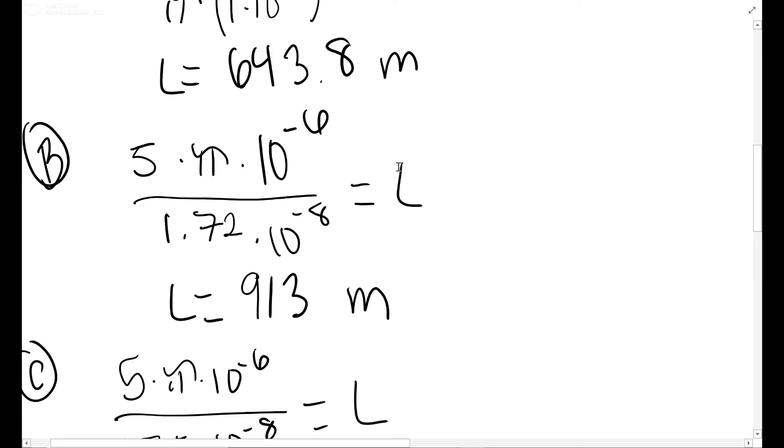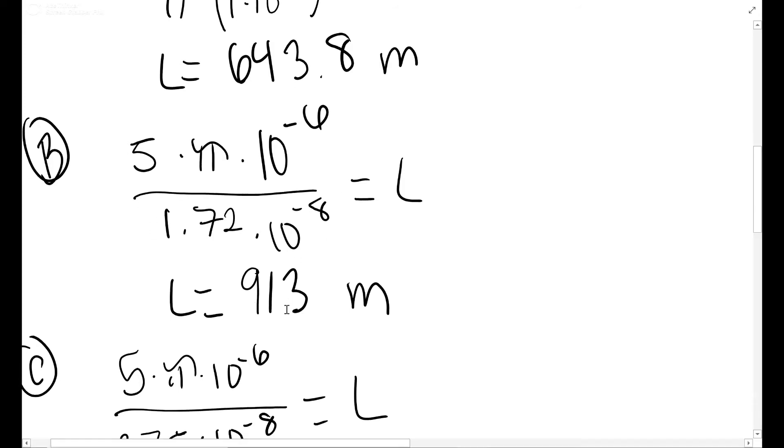For B, we're using the exact same equation. I went ahead and rearranged it so that it's equal to L. So we have the resistance times the area π r². 10⁻³ squared is 10⁻⁶ over the resistivity. So this is the next resistivity. You solve for L.